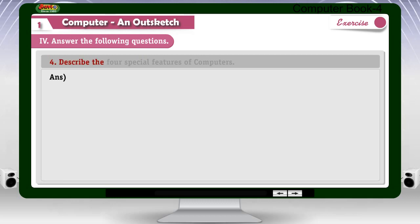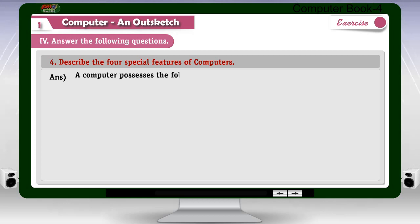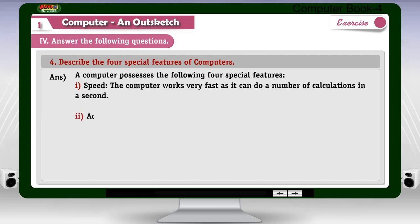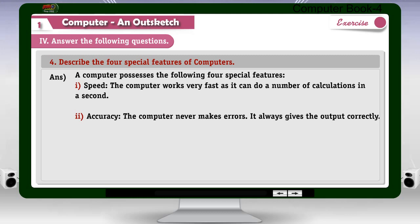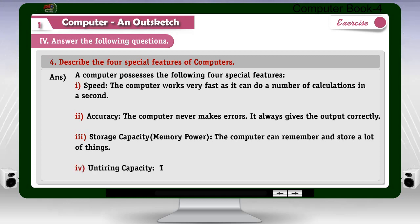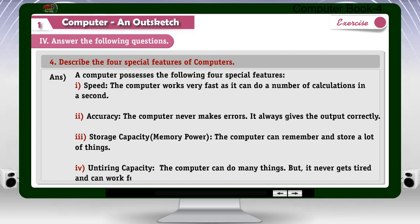Question 4: Describe the four special features of computers. Answer: 1. Speed — the computer works very fast and can do a number of calculations in a second. 2. Accuracy — the computer never makes errors and always gives the output correctly. 3. Storage Capacity/Memory Power — the computer can remember and store a lot of things. 4. Untiring Capacity — the computer can do many things but never gets tired and can work for many hours.